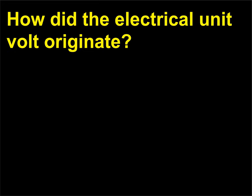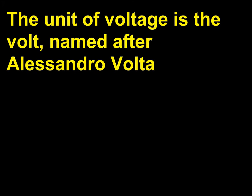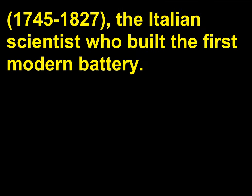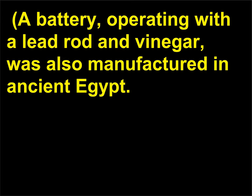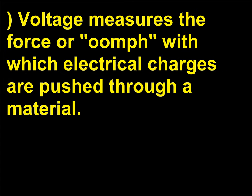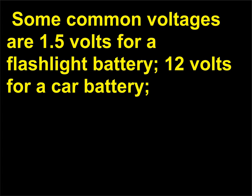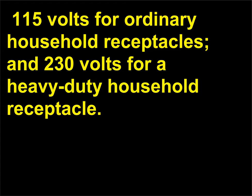How did the electrical unit volt originate? The unit of voltage is the volt, named after Alessandro Volta (1745–1827), the Italian scientist who built the first modern battery. A battery operating with a lead rod and vinegar was also manufactured in ancient Egypt. Voltage measures the force or 'oomph' with which electrical charges are pushed through a material. Some common voltages are 1.5 volts for a flashlight battery, 12 volts for a car battery, 115 volts for ordinary household receptacles, and 230 volts for a heavy-duty household receptacle.